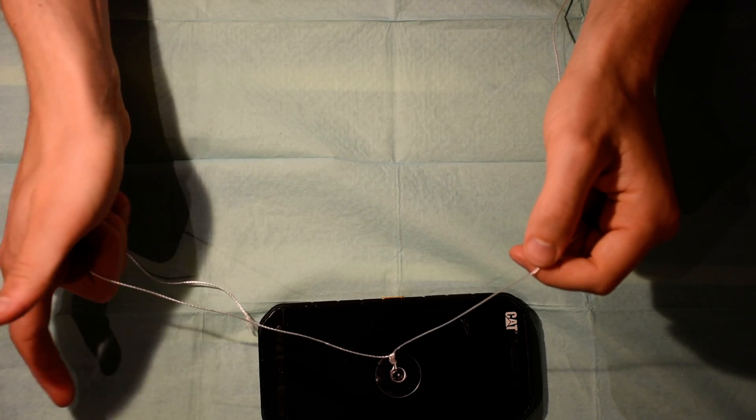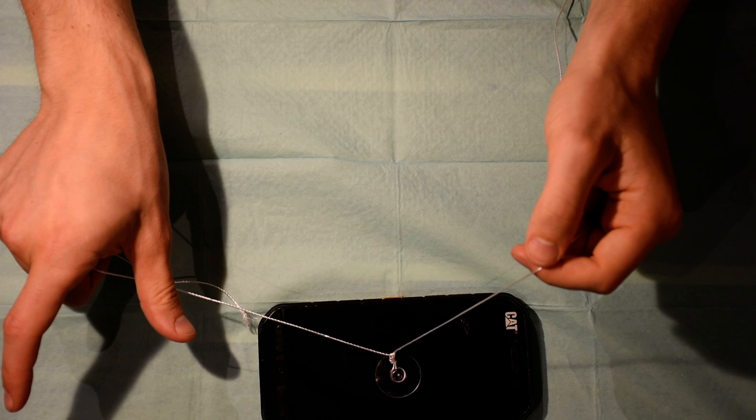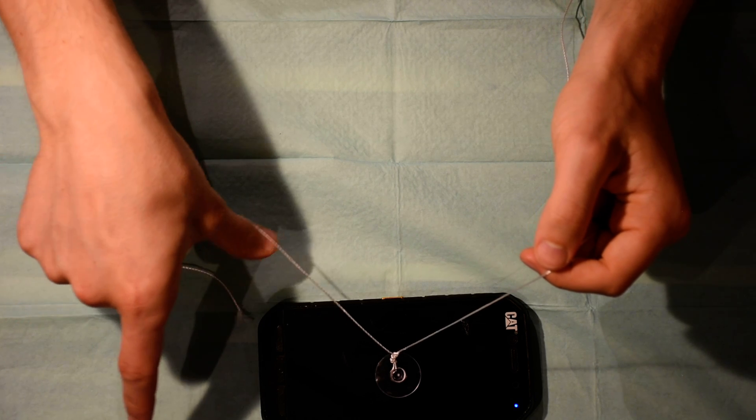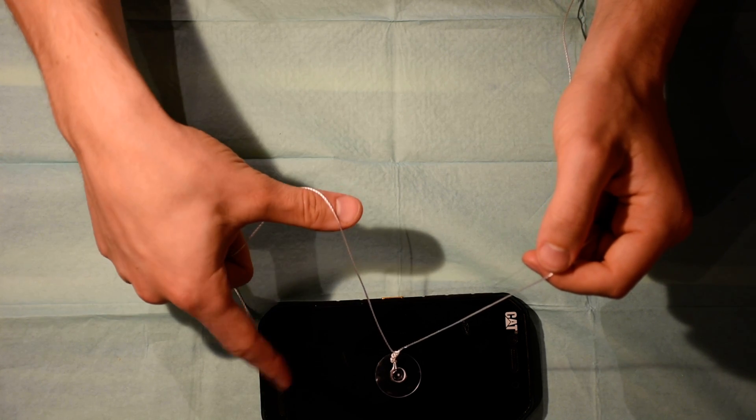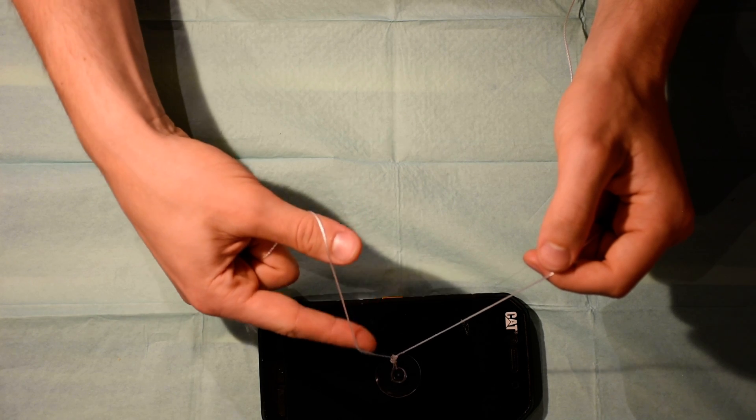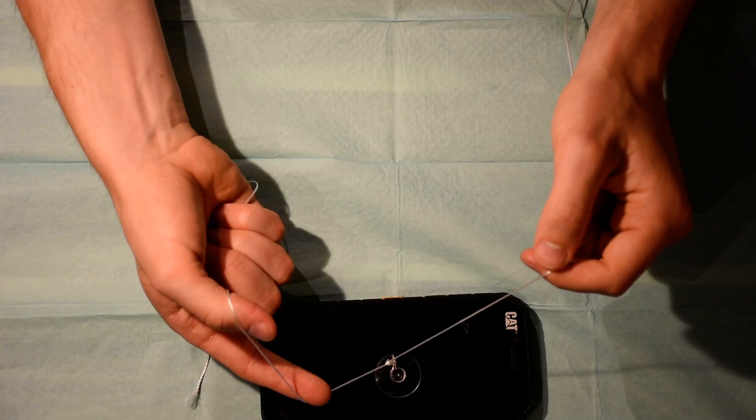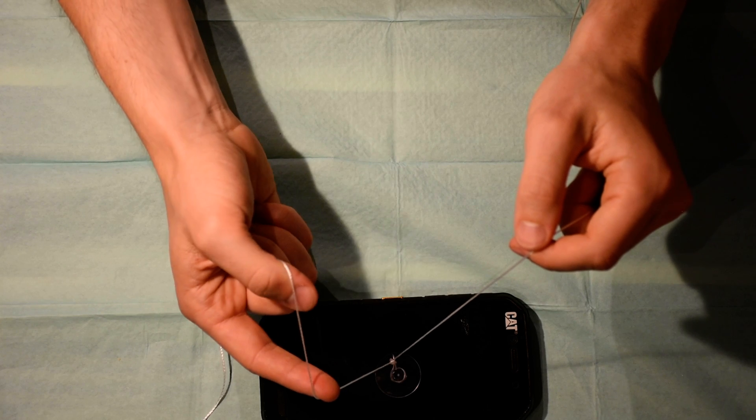You start with putting your thumb on the cord then behind the cord like this. Then you take your index finger behind the cord as well. Then you have the cord presented between your index finger and your thumb.